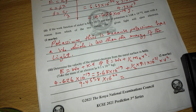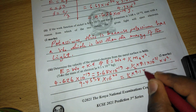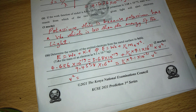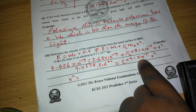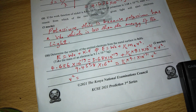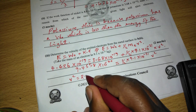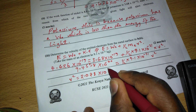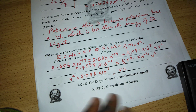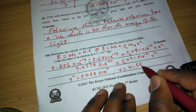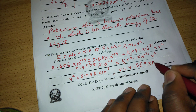This kinetic energy equals half times 9.1 times 10 to the power of negative 31 times V squared. To isolate V squared, we divide both sides by half times 9.1 times 10 to the power of negative 31. Taking the square root gives V equal to 4.559 times 10 to the power of 5.